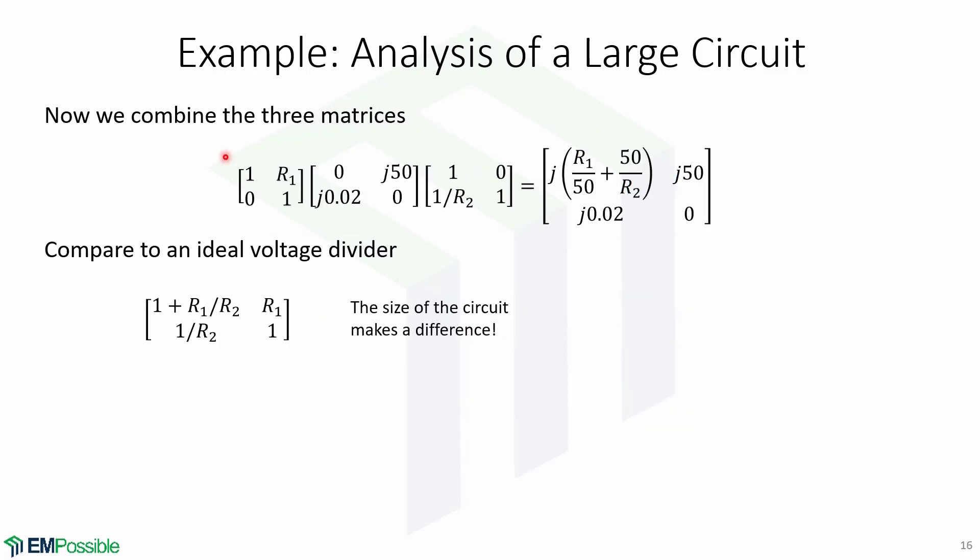Now to obtain the parameters, we can combine the three matrices by doing simple matrix multiplication. So this is going to be equal to the matrix of the network with R1 times the matrix of the transmission line times the matrix of the network with R2. Combining these three gives us this matrix. This is the ABCD matrix of the large circuit.